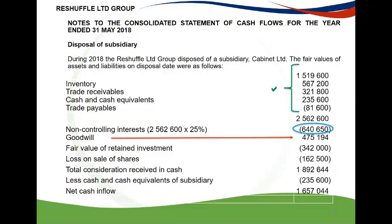Another common mistake was not listing all the assets and liabilities individually and taking a net amount. Due to these errors, students lost a lot of easy marks. Many students did not disclose the retained investment in this note, and some disclosed it at the incorrect sign. It is important to note that to arrive at the correct cash inflow or outflow, this amount should be removed from the asset value disposed, as this portion would remain in Reshuffle Limited as an asset.